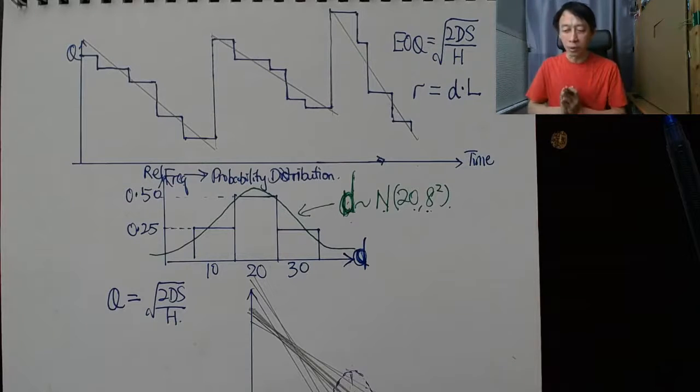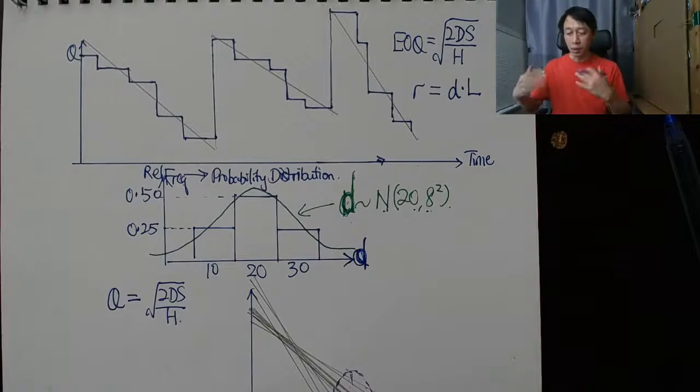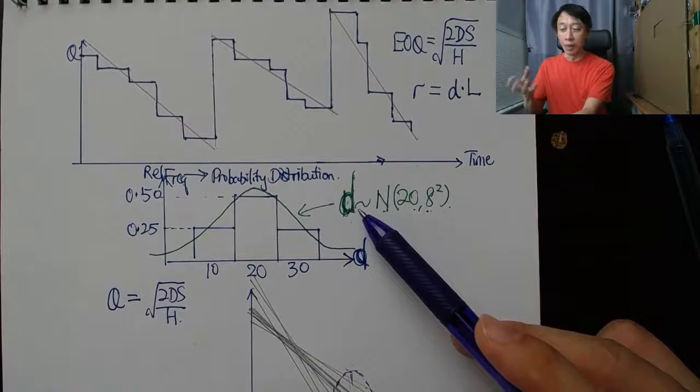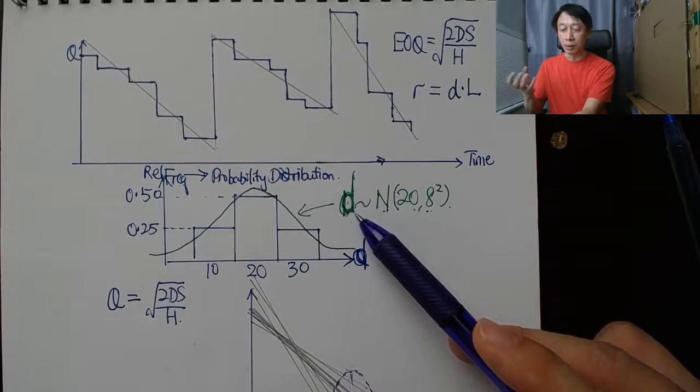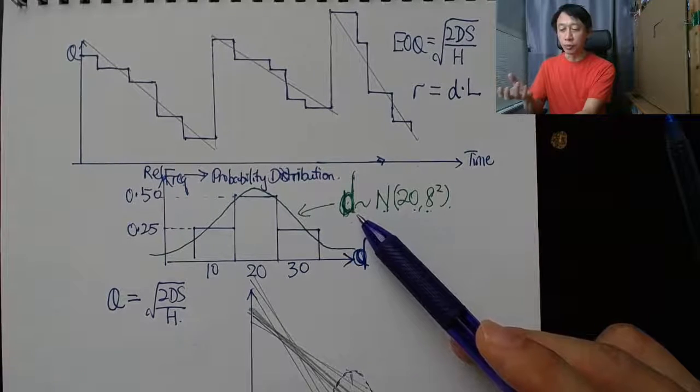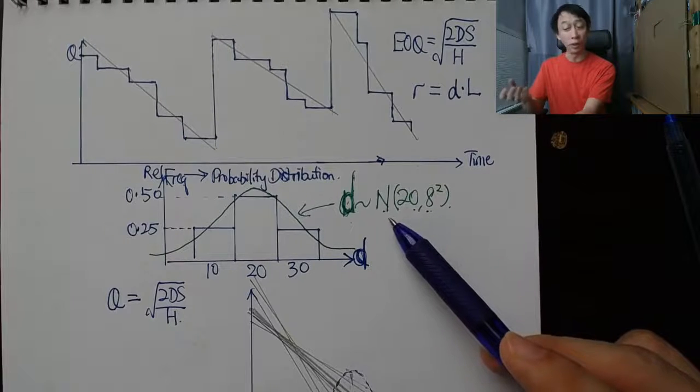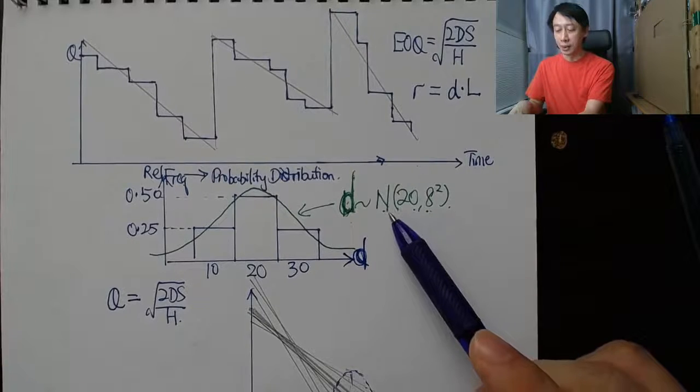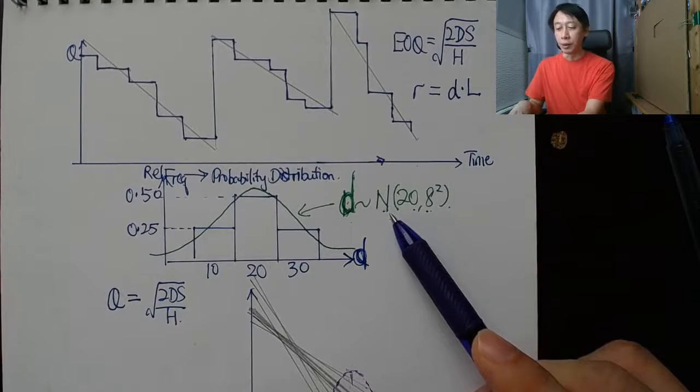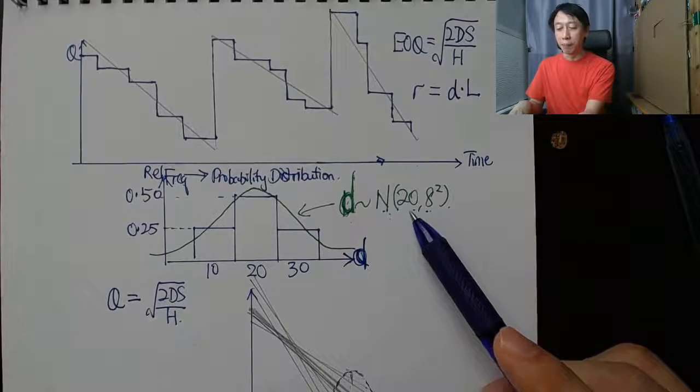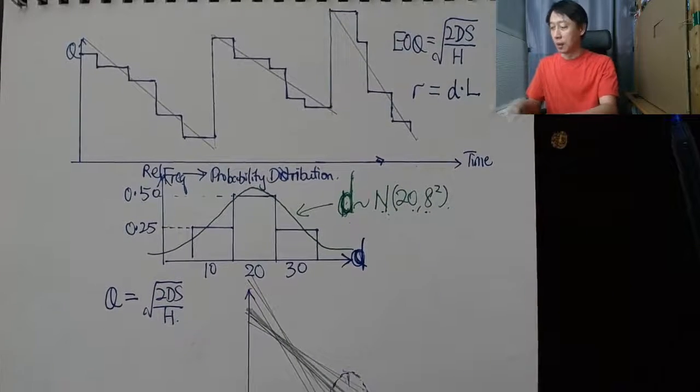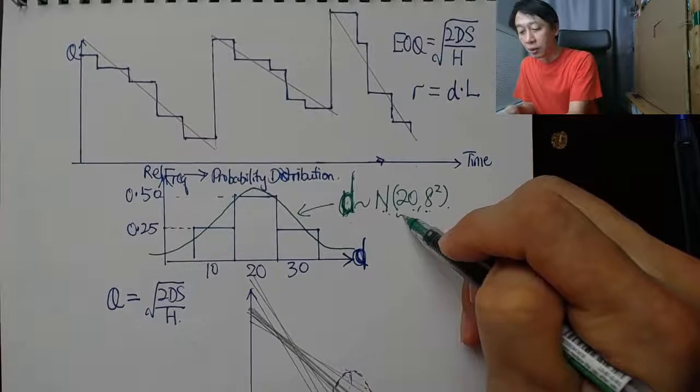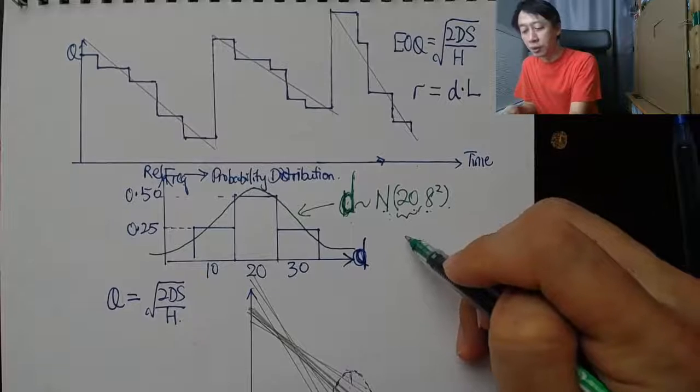That was for EOQ constant demand, constant lead time. Here we allow the demand to be relaxed. We allow the demand to be relaxed into some sort of a probability distribution, say for example normal distribution, which is very natural.